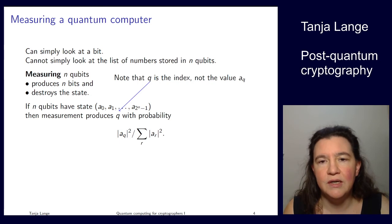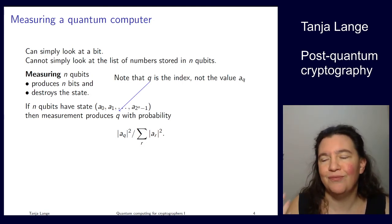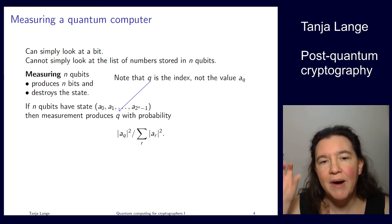And if you have a certain state, so here written again as these 2 to the n different numbers, then the measurement will produce q with this probability. The measurement produces q with probability which is proportional to the square of the value divided by, probability has to be normalized. So note this q here is the index. You're not going to measure the value. You can only increase your chance of measuring q by increasing the value stored in a sub q.